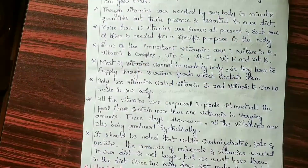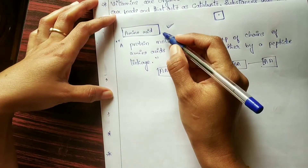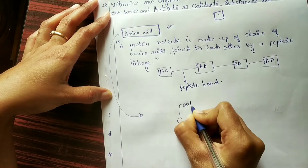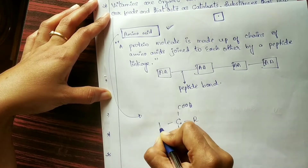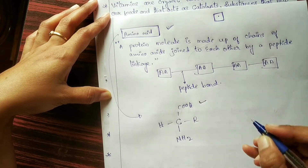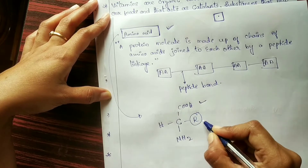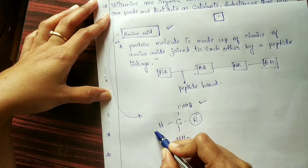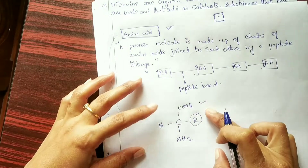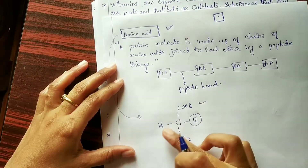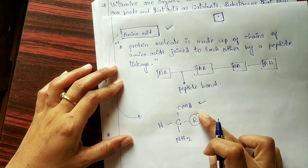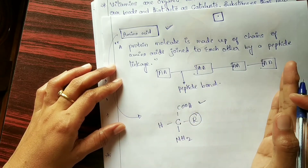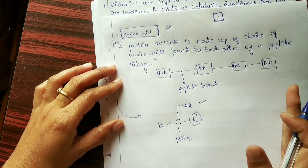Regarding the structure of amino acids — amino acids are made up of an acidic group called the carboxylic group and one side chain, called the R group, which varies from one amino acid to another. There is also an amino group and a hydrogen atom. The carboxylic group, amino group and hydrogen atom are the same for all amino acids, while the R group distinguishes one amino acid from another.